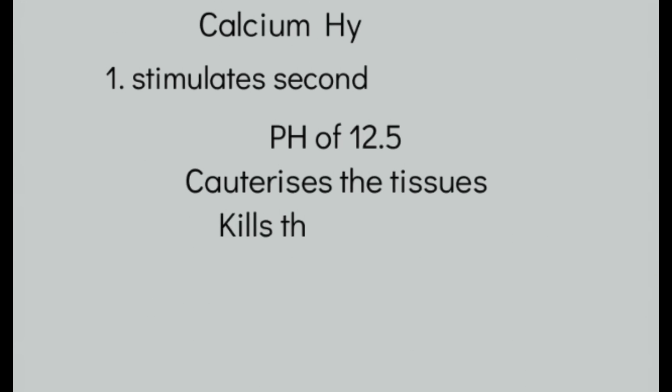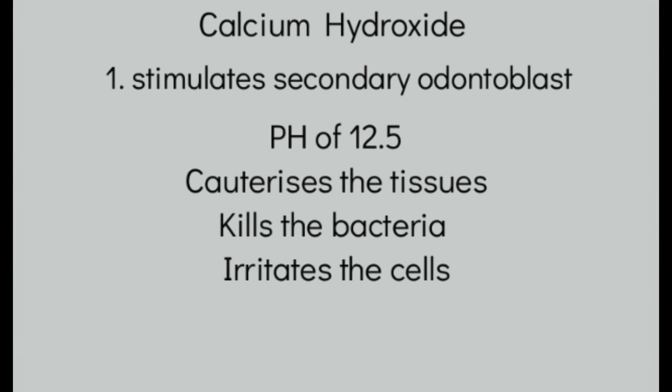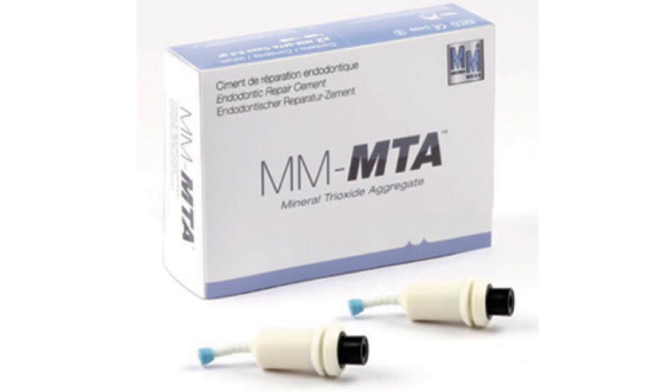This tertiary dentine is a barrier that can protect the pulp. Calcium hydroxide does this by having a very high pH of around 12.5, which cauterizes the tissue, irritates the cells, and also kills bacteria.